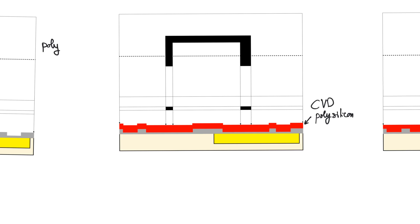The question is: why are we depositing polysilicon? Why not deposit single crystal silicon? Because the kind of temperature we need to form single crystal silicon will not allow us to keep the wafer intact — we have already created features on the wafer, specifically we have already diffused the well. So we deposit polysilicon because that's the best we can do. This polysilicon is heavily doped so that its conductivity is high, and it will be used to make transistor gates.